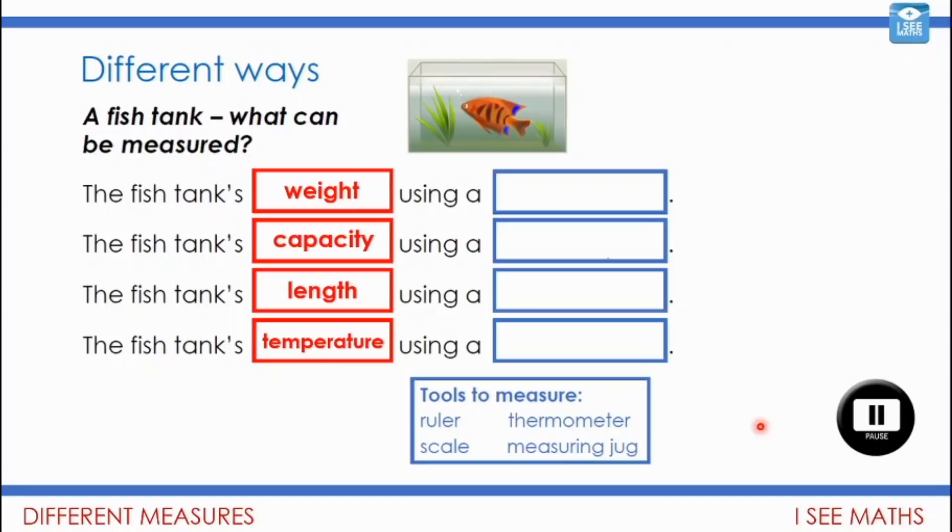Okay, let's have a little look. So fish tank's weight. Well, there. We do that using a scale. We put that on a scale. A fish tank's capacity. So how much water it can hold. You could test with a measuring jug the amount of water and you could measure it out. The fish tank's length, we're likely to do with a ruler or a measuring tape, I guess.